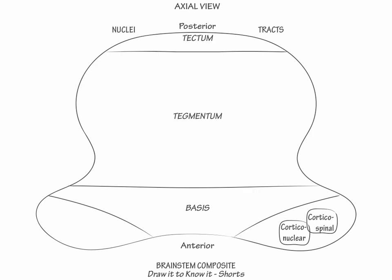Next, in the posterior basis and in the anterior tegmentum, label the supplementary motor nuclei. They comprise most notably, in the midbrain, the red nucleus and the substantia nigra, in the pons, the pontine nuclei, and in the medulla, the inferior olive.